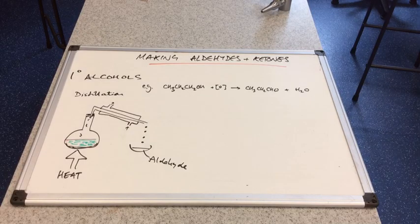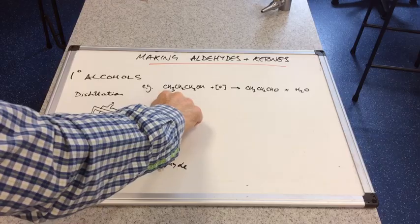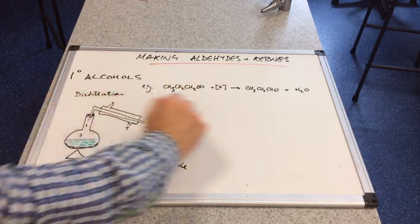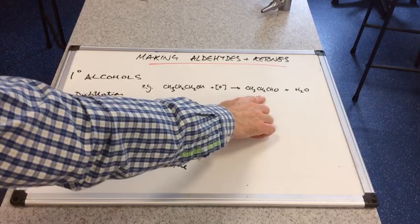So there's an example of an equation. We've got propan-1-ol oxidized under distillation. So we would make propanal and water.